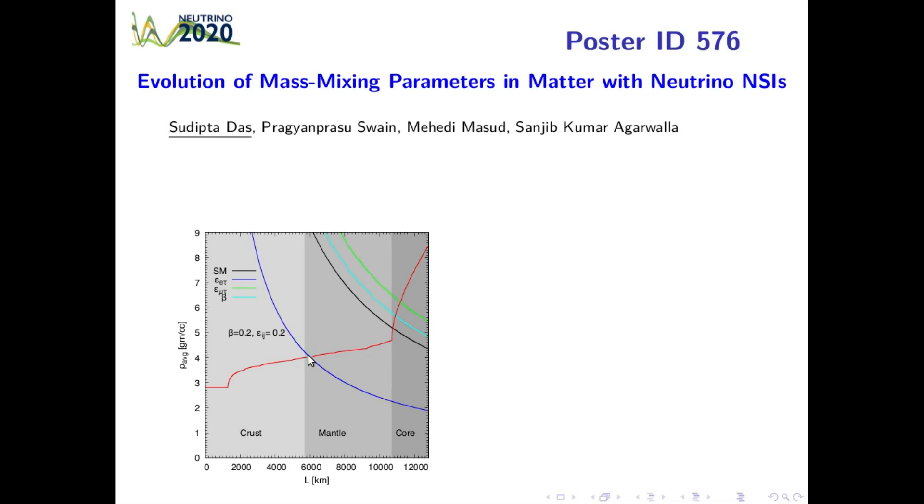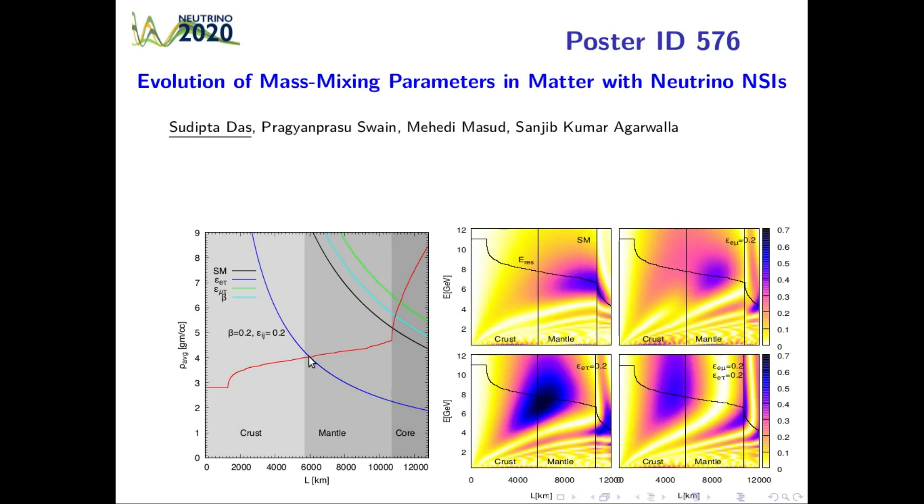This result is also validated by oscillogram of nu_mu to nu_mu appearance probability. We see that the region of maximum probability is reduced significantly in presence of epsilon_e_tau.